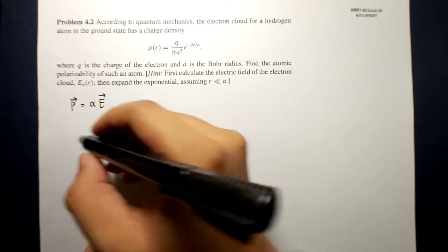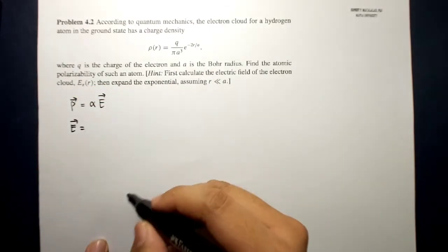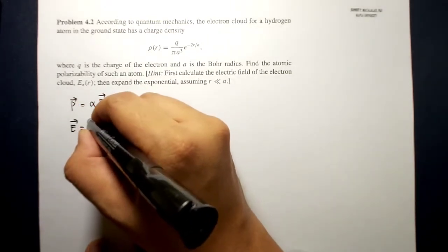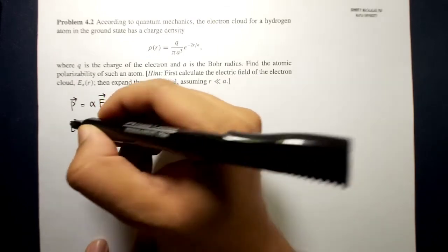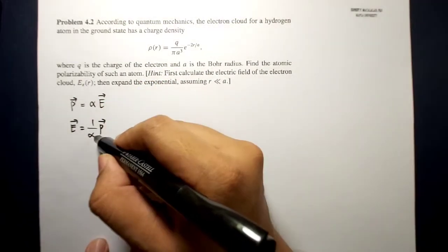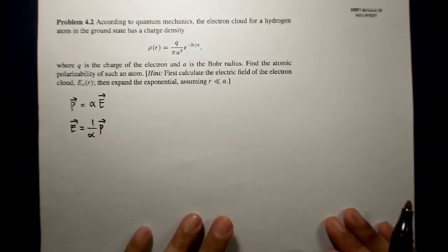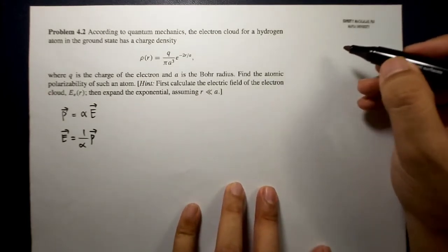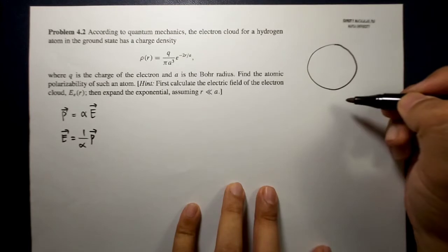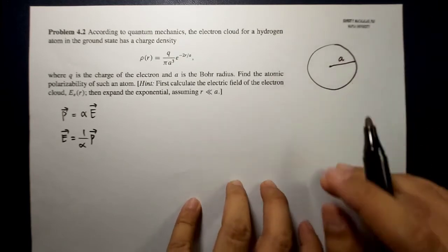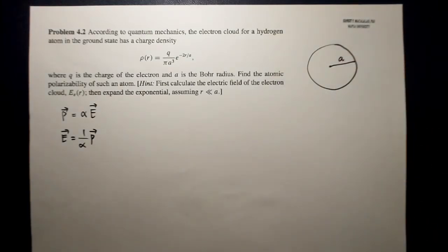One of the things that we can do is express the electric field in terms of the polarizability and the induced dipole moment, which is equal to 1 over alpha times the induced dipole moment. So with this, we need to calculate the electric field. For example, if this is your electron cloud and the electron cloud has a Bohr radius equal to A, the electric field inside the electron cloud will be determined using Gauss's law.